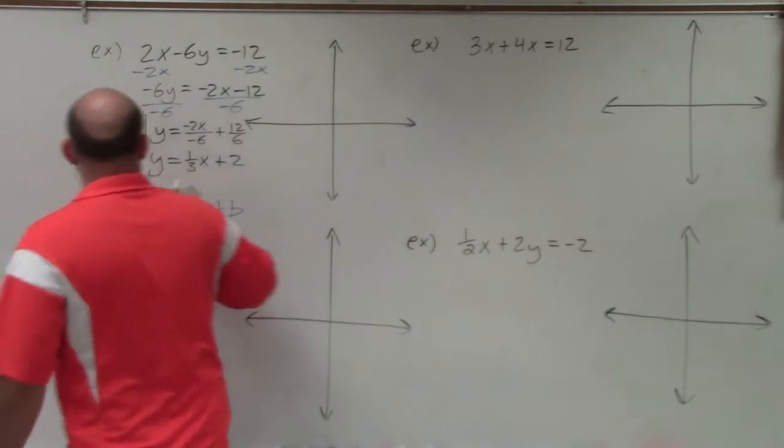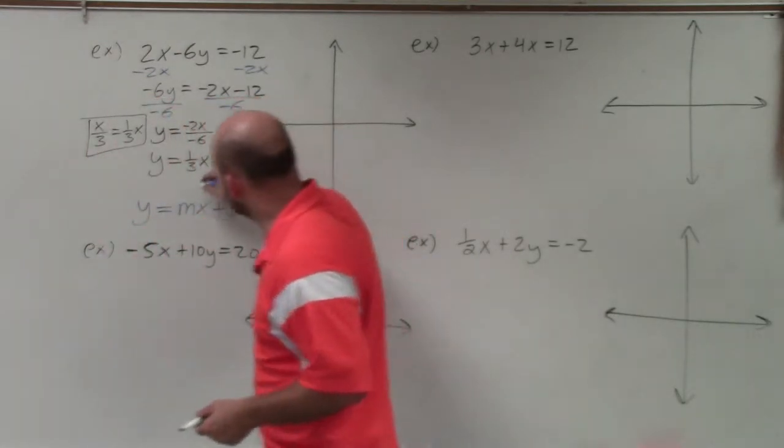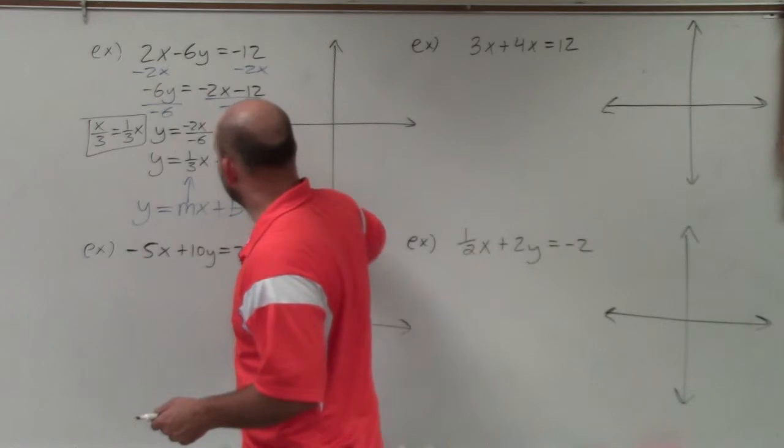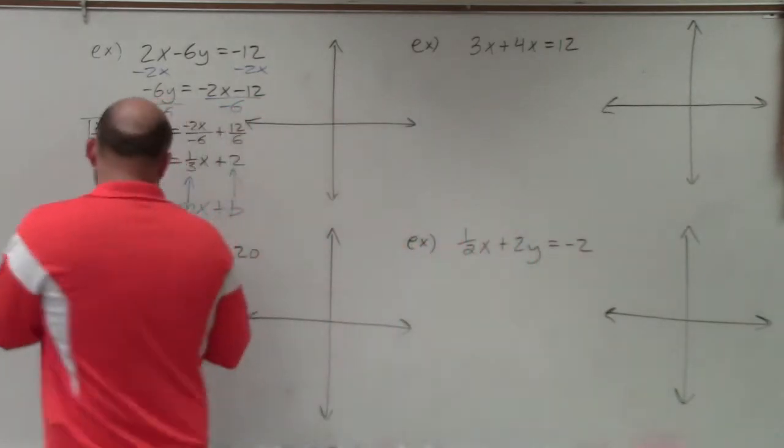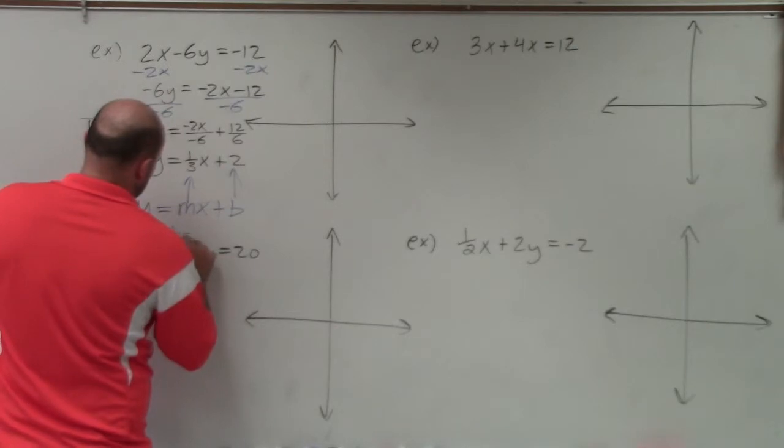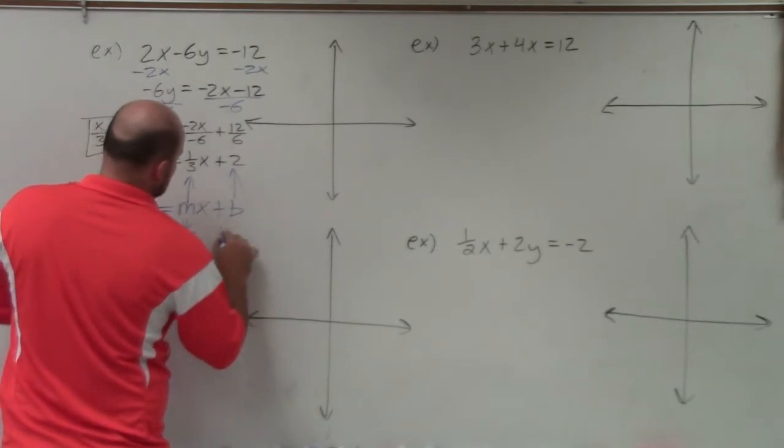And negative 12 divided by negative 6 becomes positive. So my final answer is y equals, this can reduce down to 1/3 x plus 2. You could also think of that as x over 3. x over 3 is the same thing as 1/3 x. Just make sure you notice that, or you recognize that. However, I want to write it like this, so therefore I can say my m is 1/3, and my b is 2. So remember, b represents your y-intercept. So we have slope and y-intercept.